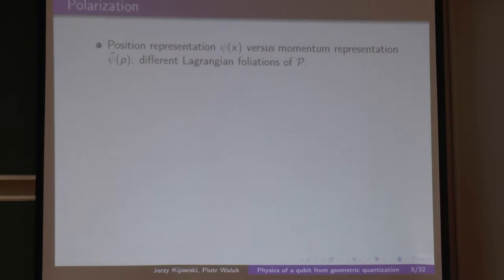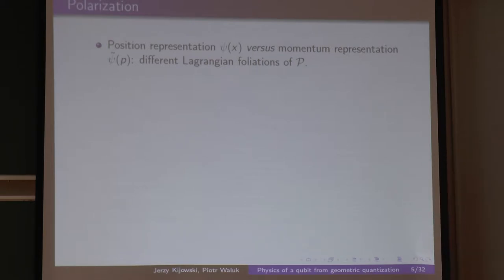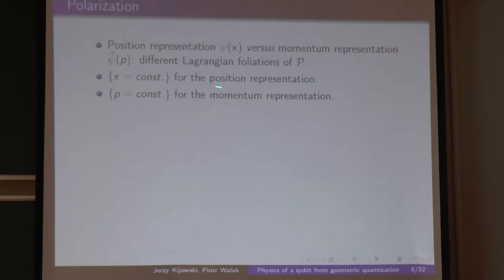The first observation is that the fact that we may use in quantum mechanics either position or momentum representation can be translated to the classical structure in the following way: to describe a quantum state, we have to consider a Lagrangian foliation of the phase space P. For the position representation it is the foliation x equals constant; for the momentum representation, p equals constant.